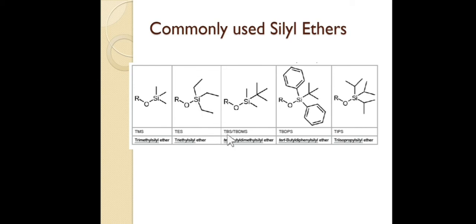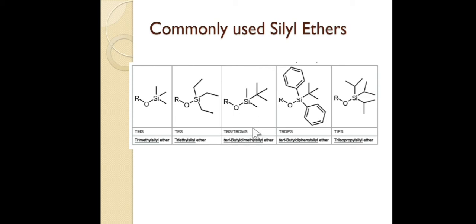Next is TBDMS — note there is some confusion with abbreviations: in TMS and TES the 'T' stands for 'tri,' but in TBDMS and TBDPS the 'T' stands for 'tertiary.' TBDMS is tert-butyldimethylsilyl, TBDPS is tert-butyldiphenylsilyl, and the last one is TIPS — triisopropylsilyl.